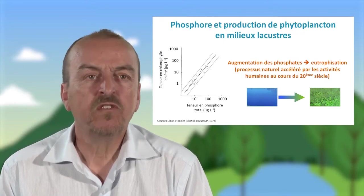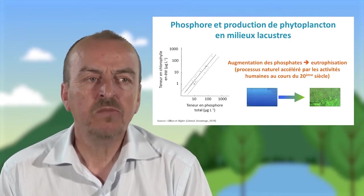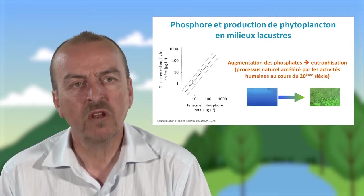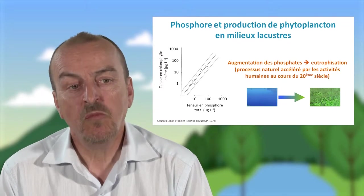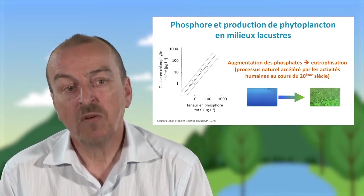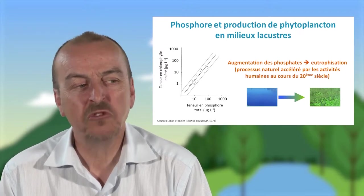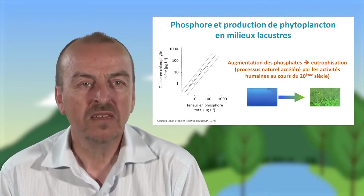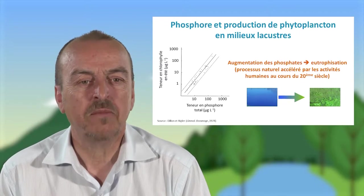Cette augmentation du phosphore s'est traduite dans un très grand nombre de cas par un enrichissement énorme des algues, avec parfois des explosions absolument non contrôlées aboutissant à la fin à une mort de cette biomasse algale, et arrivant parfois à quasiment la mort de l'écosystème. Donc on passe d'eau extrêmement claire en quelques décennies à des eaux très turbides et une réduction de toute la biodiversité de ces écosystèmes.